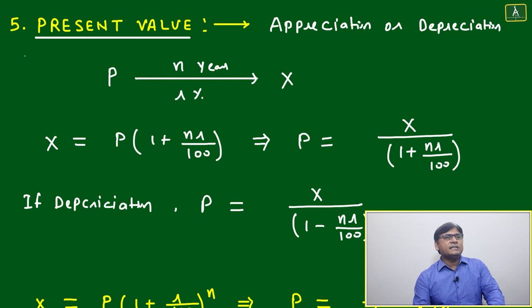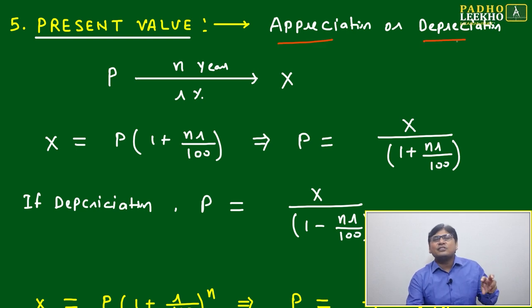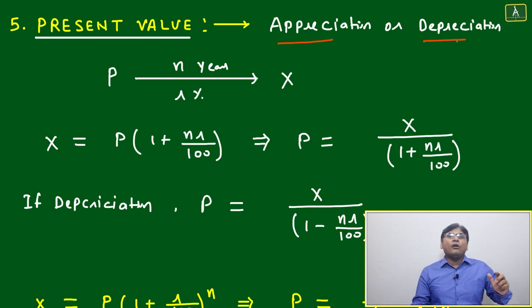The next point is also equally important to understand in comparison to compound interest, and that is called present value. This will be used for either appreciation or depreciation, like anything that keeps on changing in the next 10 years or future, or in the next five years of time.